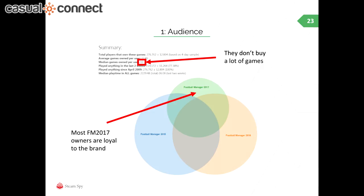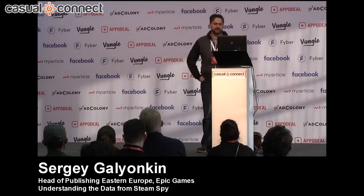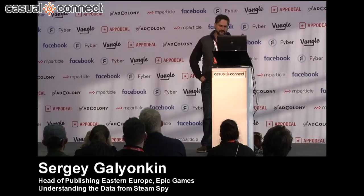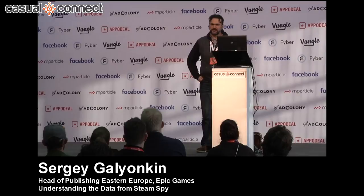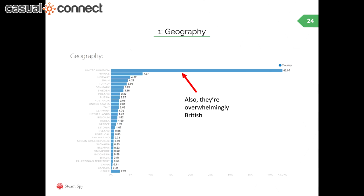But when you check Football Manager — and it's easy because we're talking about an outright clone — you'll find out that Football Manager's audience is people who do not actually play a lot of games: they own only 12 games on average, which is a small number. Of those 12 games, they own a lot of Football Manager editions because it's a yearly game. If you look at Football Manager 2017, most owners are coming from the previous edition. They tend to be loyal — so Football Manager is going to be the audience tractor for our game.